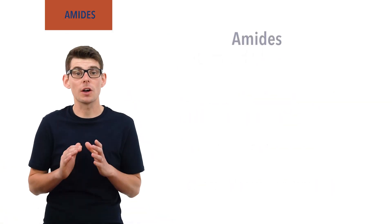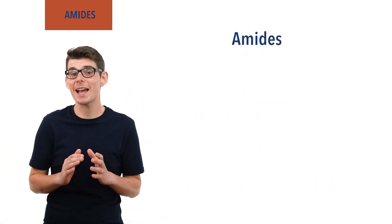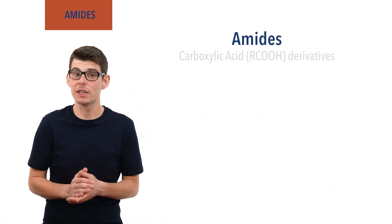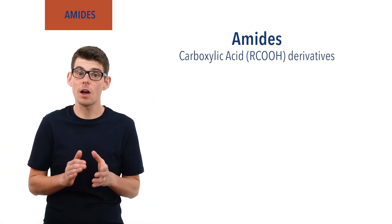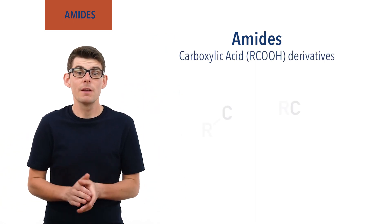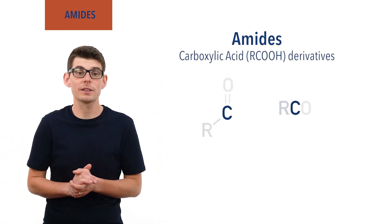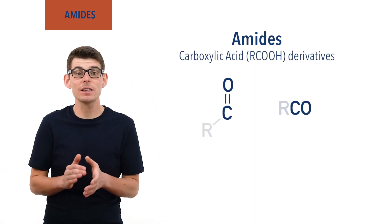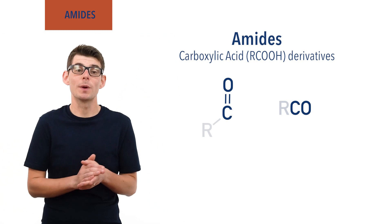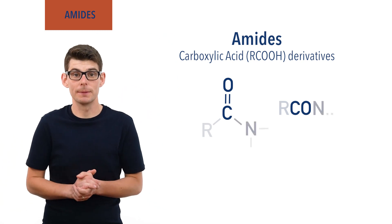According to the Brønsted-Lowry definition, acids are proton donors and bases are proton acceptors. The basicity of a base refers to how easily and readily it accepts a proton and remains as a conjugate acid. Strong bases readily accept protons and weaker bases less readily accept protons. Recap done? Let's go! Amides are carboxylic acid derivatives that have a carbon atom double bonded to an oxygen atom and single bonded to a nitrogen atom.